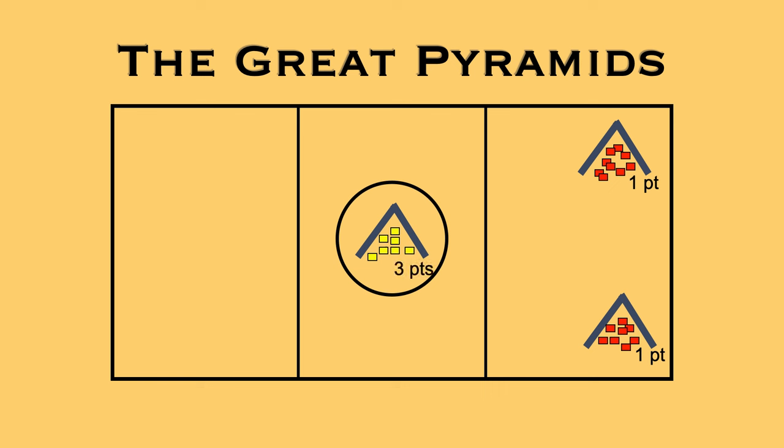And then you're going to make some teams, and the teams are going to be caravans. So we've got caravans in Egypt, and we have three of them here, players anywhere from three, four, or five.